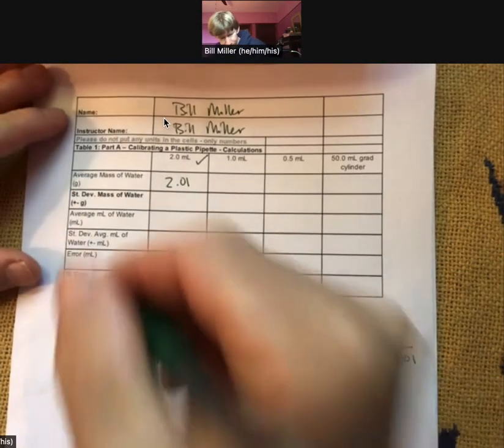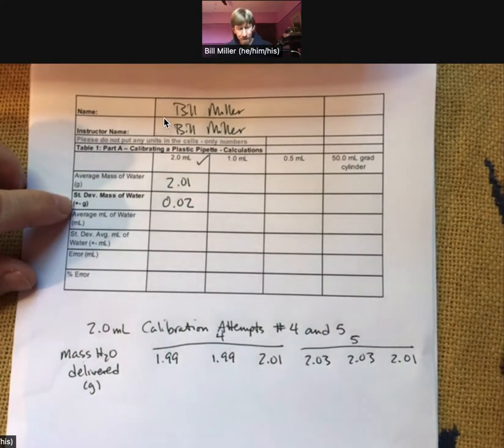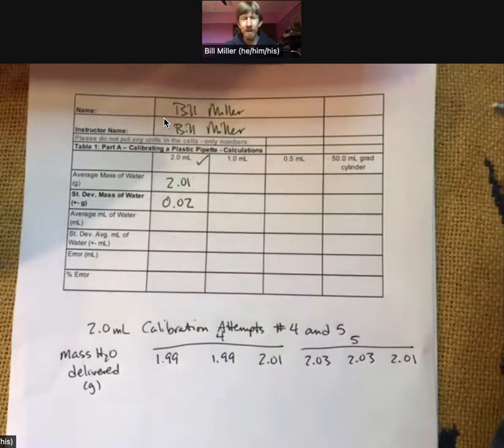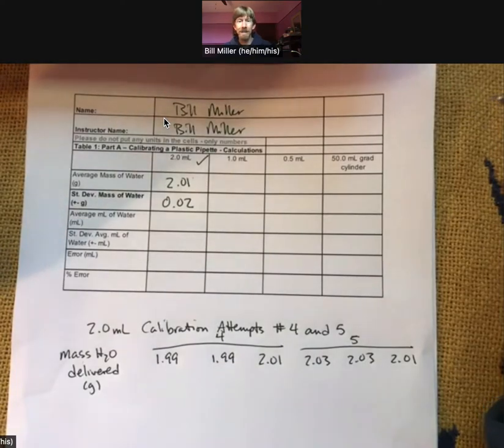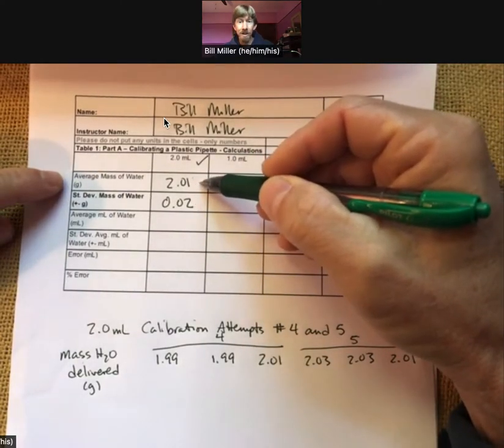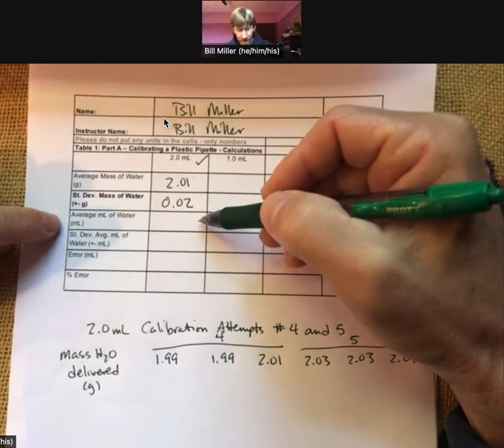So to two decimal places, I'm going to round 0.02. The plus or minus is over here. Remember, we're just putting numbers in here, not units. We've rounded it to the same number of decimal places as our average mass of water. That's a good rule of thumb. If you were to do a rigorous analysis of the significant figures, 99% of the time, the number of decimal places in your standard deviation is also the number of decimal places in your average.